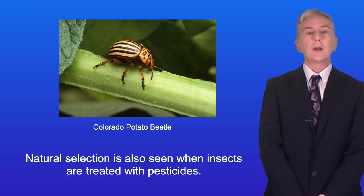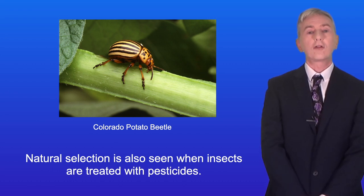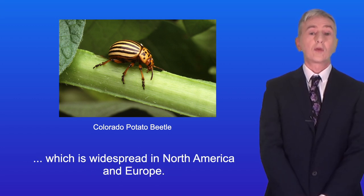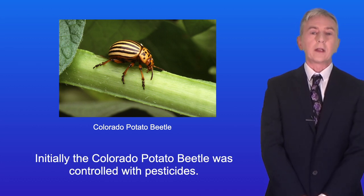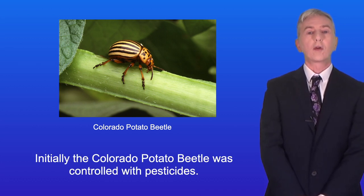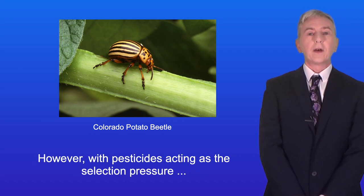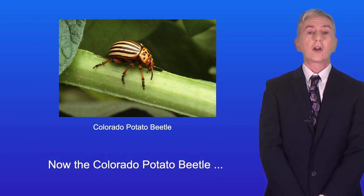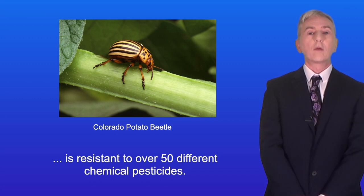Natural selection is also seen when insects are treated with pesticides. The Colorado potato beetle is a major agricultural pest which is widespread in North America and Europe. Initially, it was controlled with pesticides. However, with pesticides acting as the selection pressure, natural selection led to the development of pesticide resistance. Now the Colorado potato beetle is resistant to over 50 different chemical pesticides.